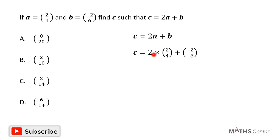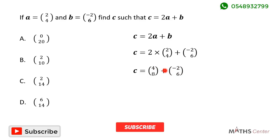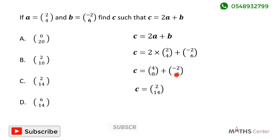Vector C equals 2 times (2, 4) plus (-2, 6). 2 times 2 gives 4 and 2 times 4 gives 8, so vector C equals (4, 8) plus (-2, 6). 4 plus negative 2 gives 2, and 8 plus 6 gives 14. So the components of vector C are (2, 14), and the correct option is C.